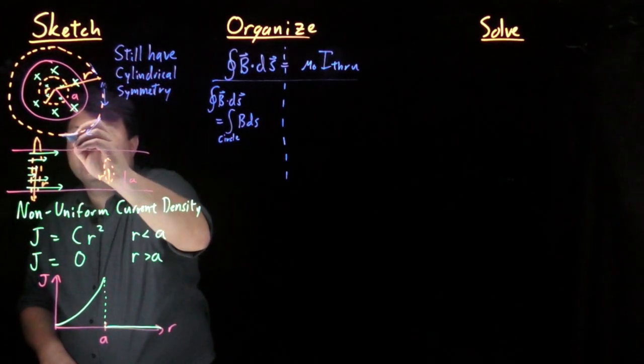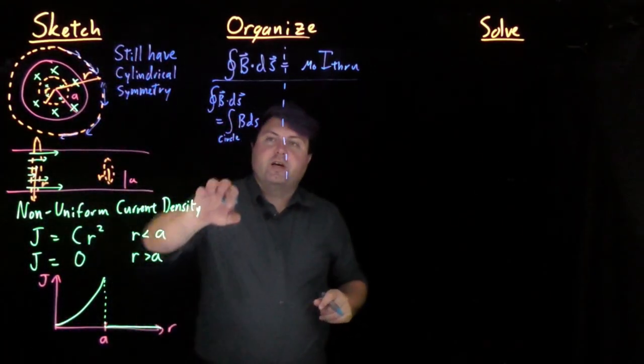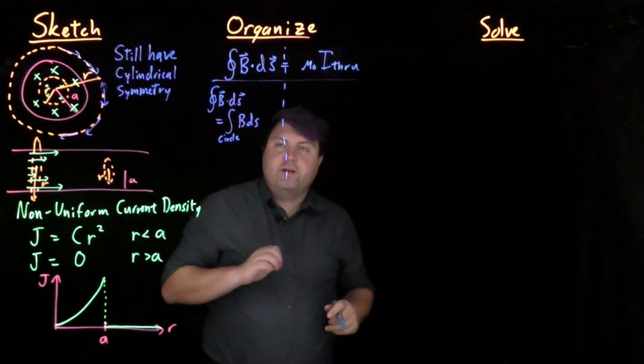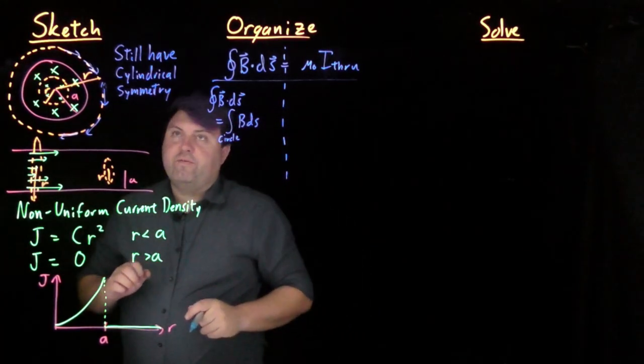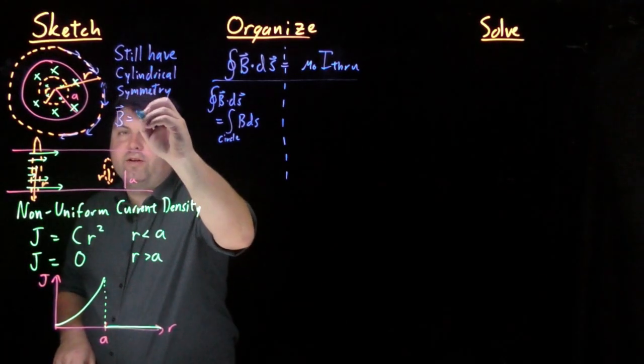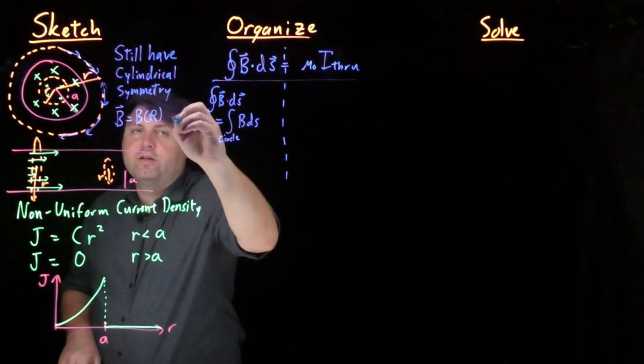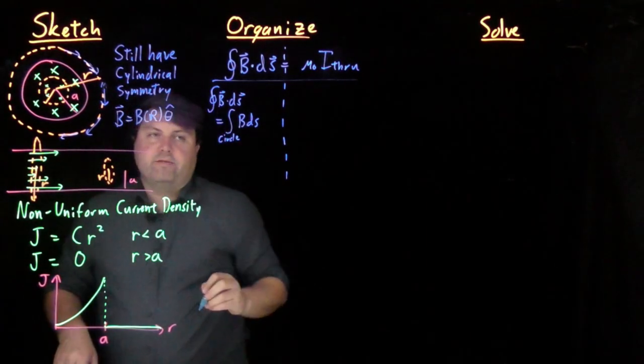Based on this current, our dot product resolves to one, and then our magnetic field, since we have cylindrical symmetry, we know that our magnetic field is a function of the radius, and in the theta hat direction.